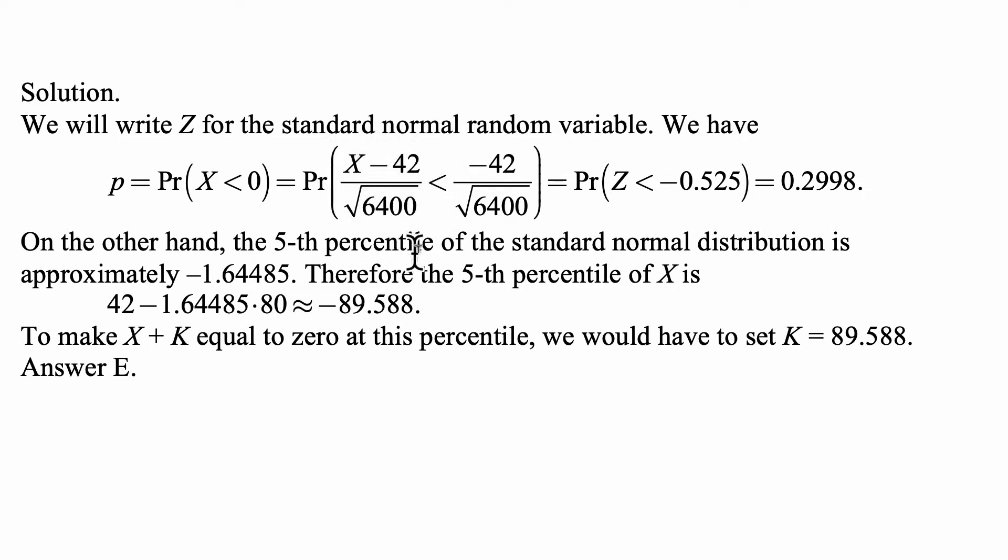Now, the left-hand side is now standard normal, because X is normal with mean 42 and standard deviation square root of 6400. So this can be replaced by Z. And the left-hand side we just calculate, and that's equal to negative 0.525.